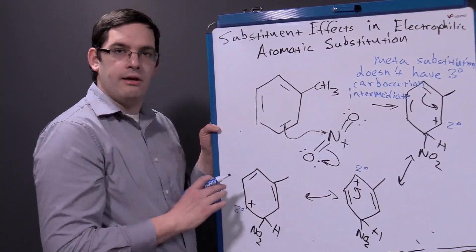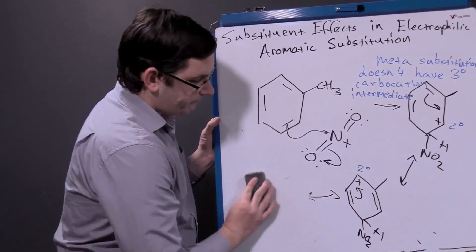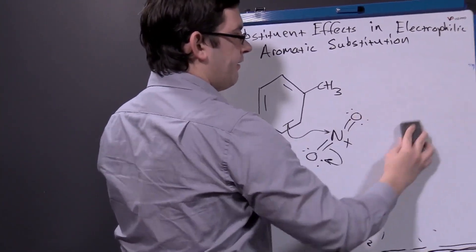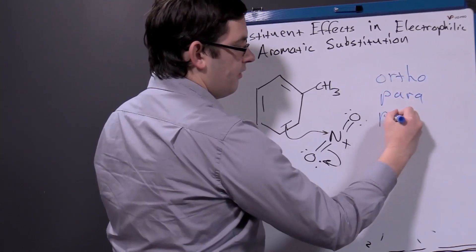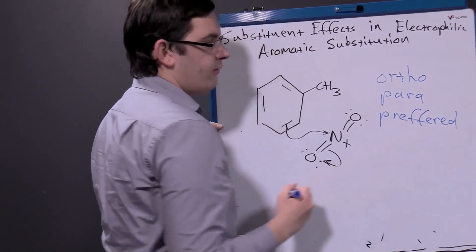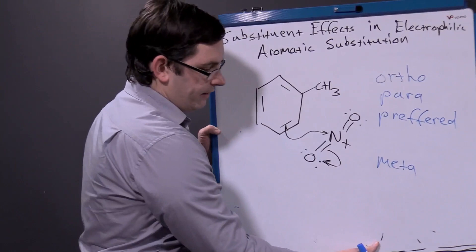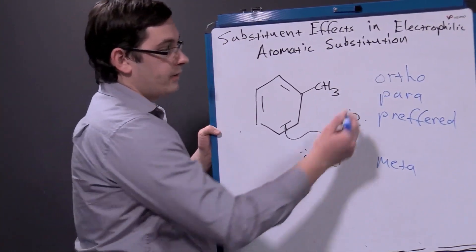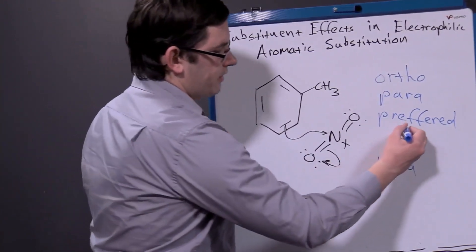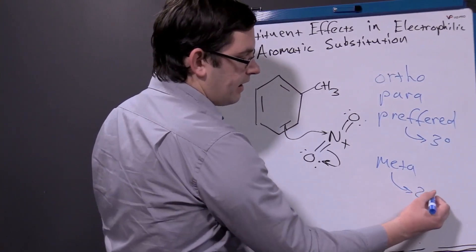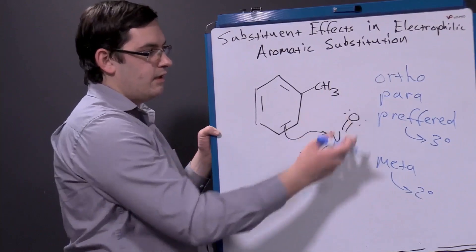Our third possibility, the para substitution pattern, will also lead to a tertiary carbocation intermediate. So what we'll see overall is that our ortho and para substituted products will be preferred — the majority of our products will have the ortho or para substitution pattern, while we'll have less meta product produced. Feel free to try to draw out the para product as an exercise and you'll be able to see that it does indeed produce a tertiary carbocation. Just the difference between that tertiary carbocation versus the secondary carbocation in our intermediate determines the overall effect on the rate and therefore the overall percentage of our final products produced.